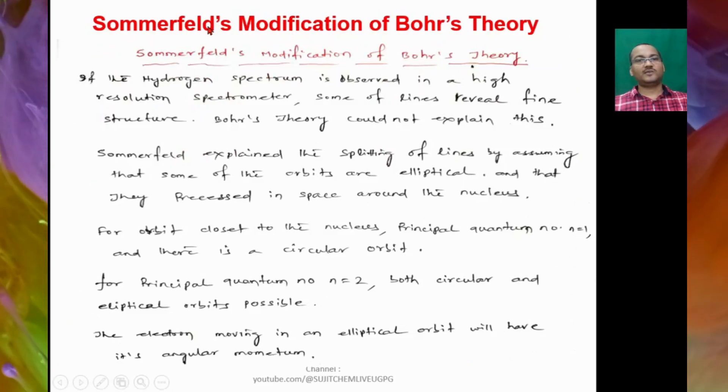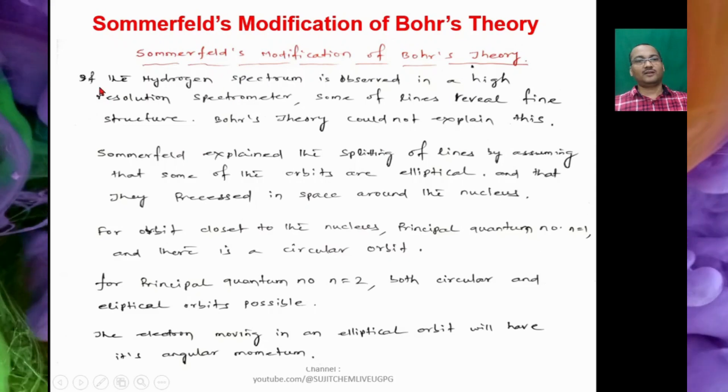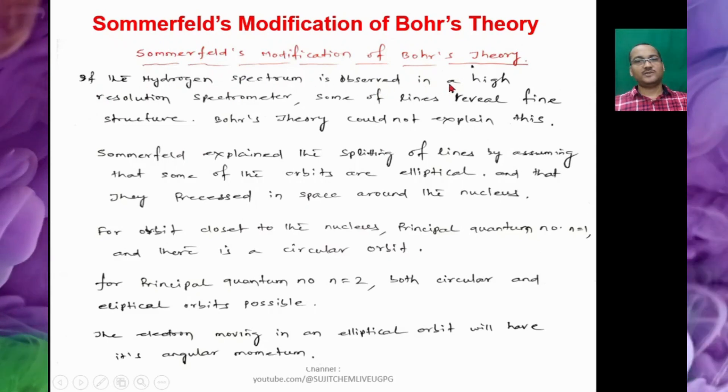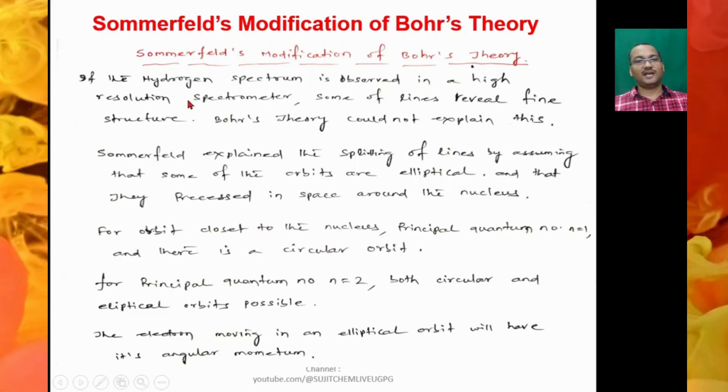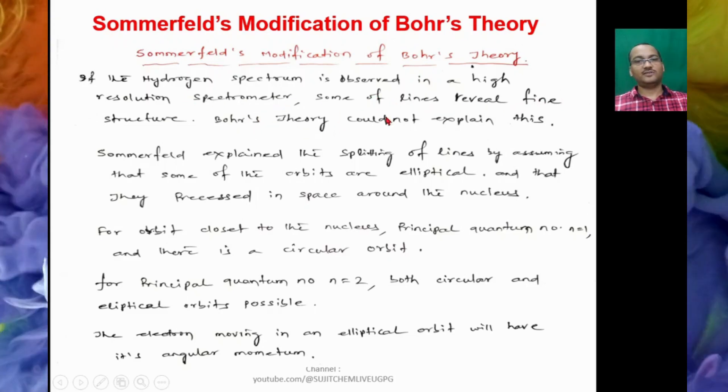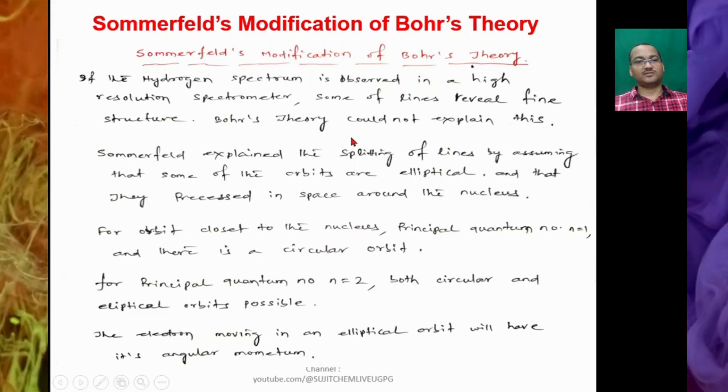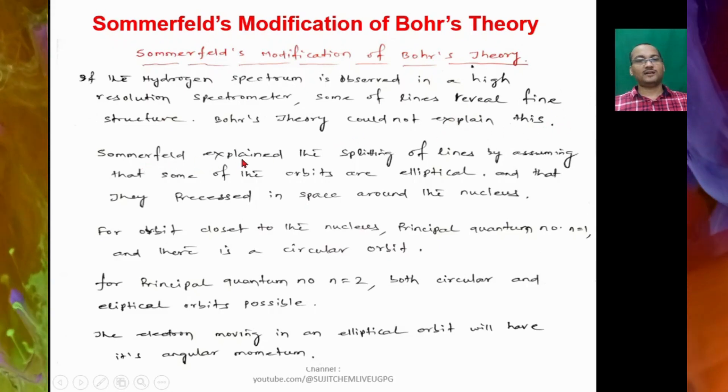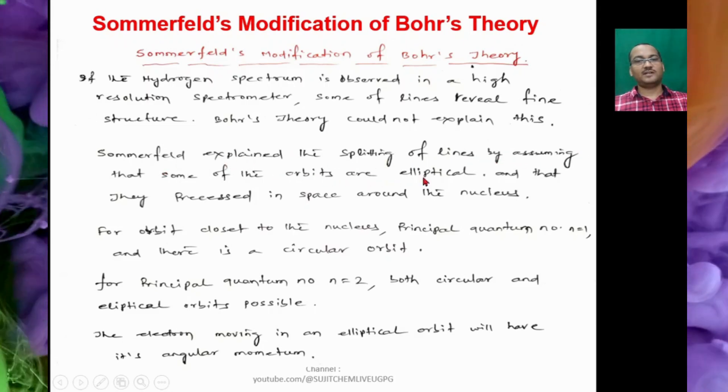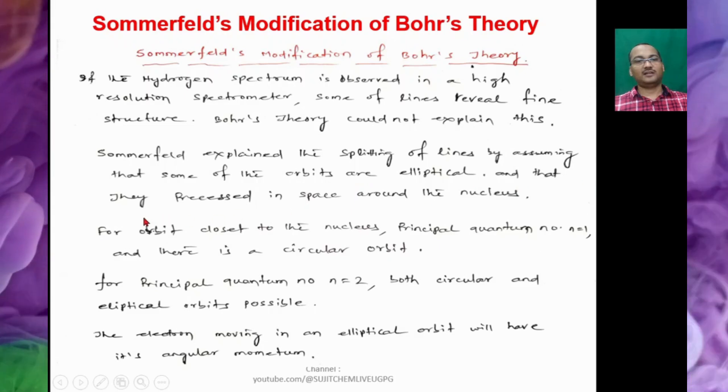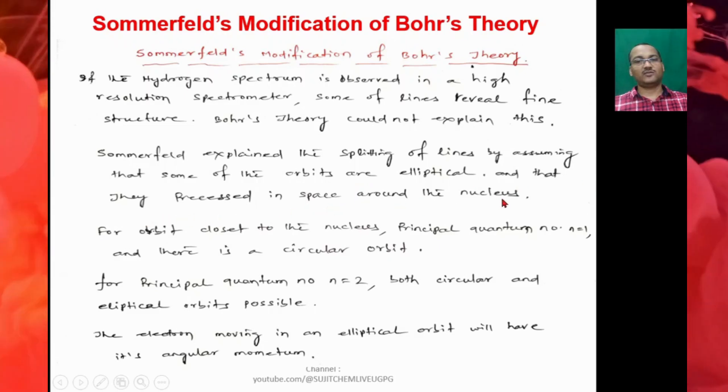So next is Sommerfeld's modification of Bohr's theory. If the hydrogen spectrum is observed in a high resolution spectrometer, some lines reveal fine structure and Bohr's theory could not explain this fine structure. So Sommerfeld explained the splitting of lines by assuming that some of the orbits are elliptical and that they are precessed in space around the nucleus.